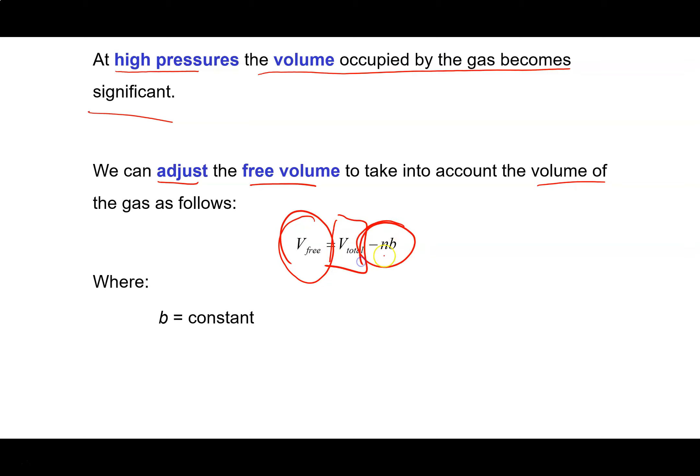The volume available for particles to move in equals the total container volume minus the number of moles times a constant B. B is characteristic of a particular gas—every gas has its own B. The bigger your gas molecule, the bigger B will be, because B represents the space taken up by a mole of gas molecules.